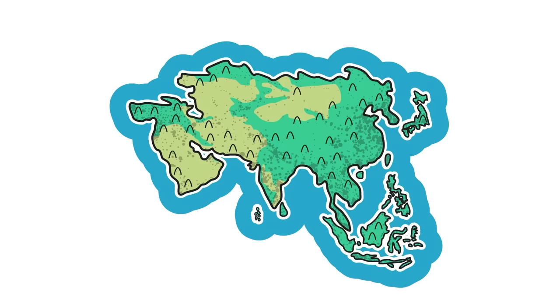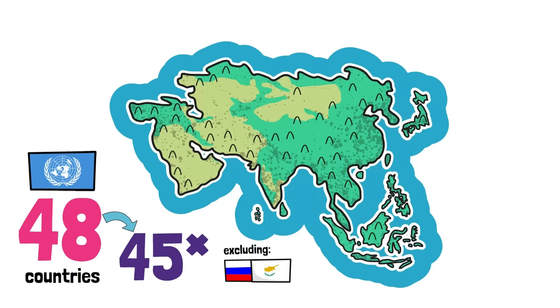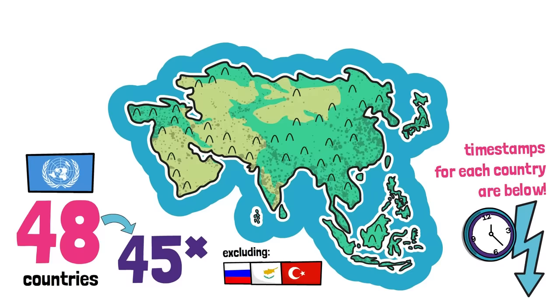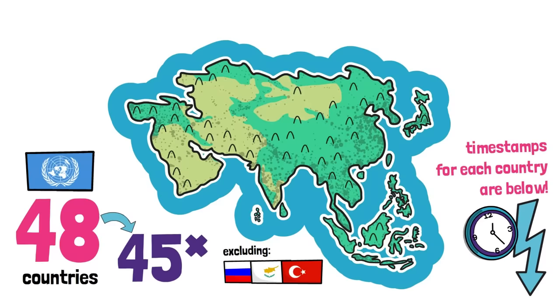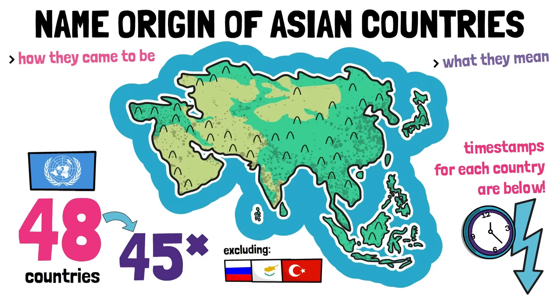Asia has 48 countries according to the United Nations, but for this video we're only counting 45, since I already covered Russia, Cyprus, and Turkey's name in the European version of this video due to their partial belonging to that continent, and I'm including Timor in the one I make for Oceania. Timestamps are in the description if you want to skip ahead to any country, since this is a somewhat long video. For each of these Asian countries I'm going to be looking at their name origin, how it came to be, what it means, and how it has in some cases changed throughout history. For Europe we went west to east, and for America we went alphabetically, so let's go east to west here, starting with the ones on the thumbnail.